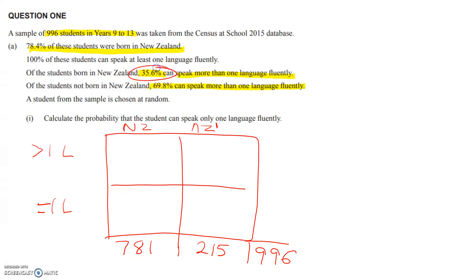We first of all can get 781 here and 215 here. Applying these percentages now to the students born in New Zealand, I get 278 in here, 503 in here, 150 here, and lastly 65 here. And then I can add along the sides, 428 here and 568 here. If you can't figure out how I got those, send me an email or leave me a comment and I'll go over it more slowly.